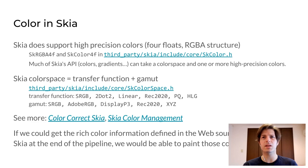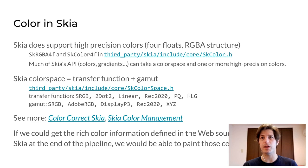Interestingly, Skia does not have the same limits in color precision and range as Blink does. Internally, it has a format for high precision colors that holds four float values, and it is also able to take color spaces into account. Much of the Skia API is already able to take as input a color space and one or more high precision colors defined in it. So Skia is able to paint richer colors on hardware that supports them.